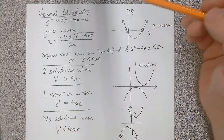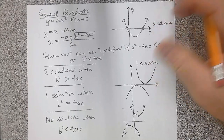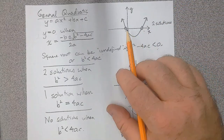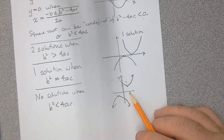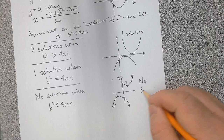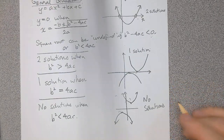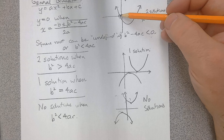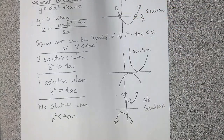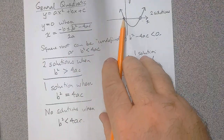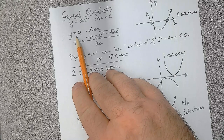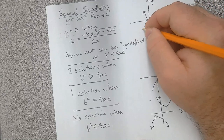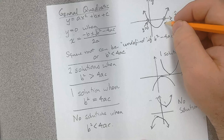Right now we're going to talk about various things about quadratics — how they work and how we get solutions. We can have two solutions to a quadratic, one solution, or no solutions. A solution exists if the graph crosses the x-axis, and when the graph crosses the x-axis, that is when y equals zero — right there at the x-intercept.